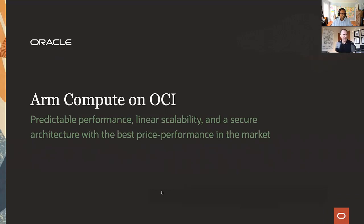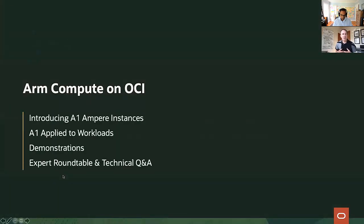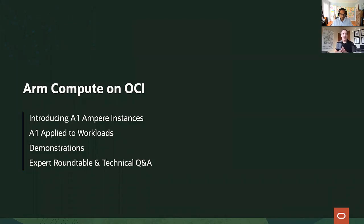Thanks, Kenna. Welcome everyone — thanks for joining us today. I'm Jeff, part of the OCI Compute Product Management Team. During our time together, we're going to get pretty deep into ARM compute on OCI. We'll introduce what A1 Ampere instances are all about, look at workloads common to what you use today and how they can take advantage of A1 instances, examine demonstrations showing how to deploy quickly and run multi-architecture solutions, and then we have a roundtable of technical experts ready to discuss A1 and answer your questions.